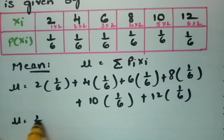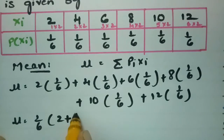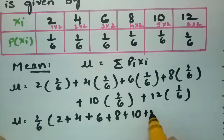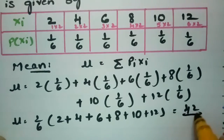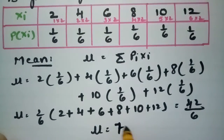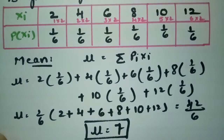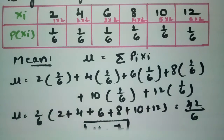Taking 1/6 as a common factor, μ = (1/6)(2 + 4 + 6 + 8 + 10 + 12) = 42/6. Therefore, the mean μ is equal to 7.